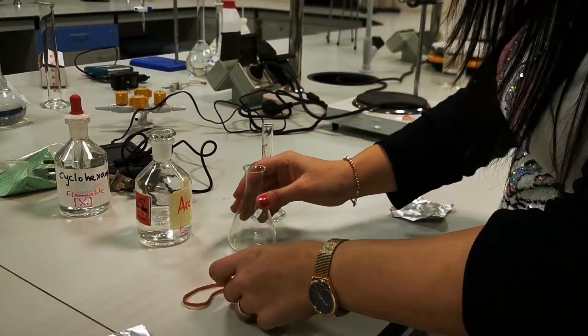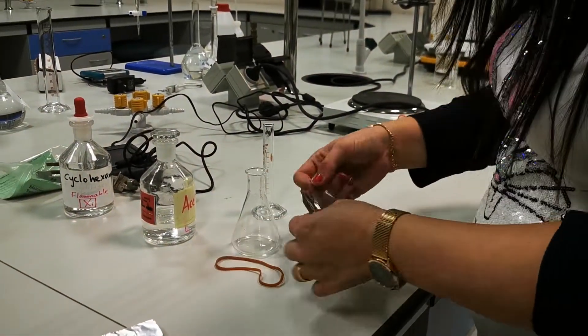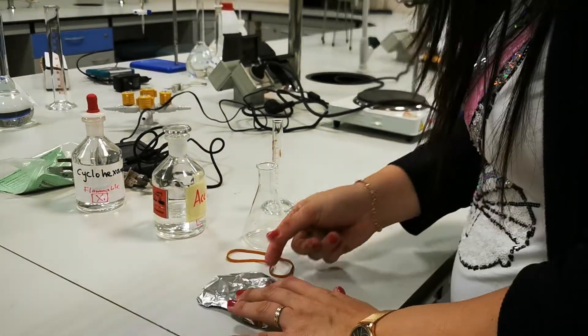Okay, so this is the Erlenmeyer flask, the rubber band, and the aluminum foil that we already measured the mass.